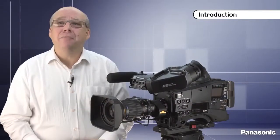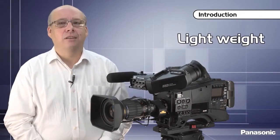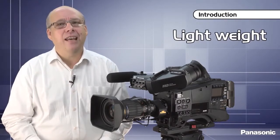As of now, the HPX600 is the world's lightest two-third type shoulder camera, weighing in at only 2.8 kilograms. As mentioned before, there's a range of hardware and software updates available for you to customize your camera to meet your needs.